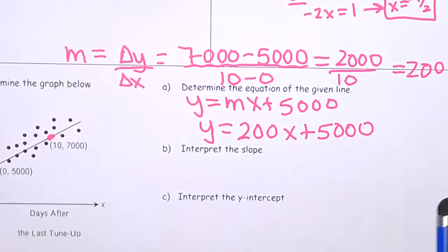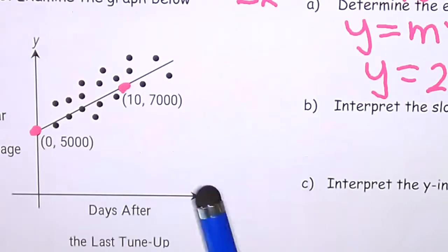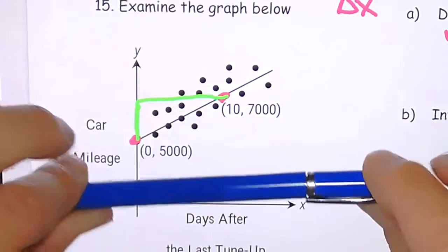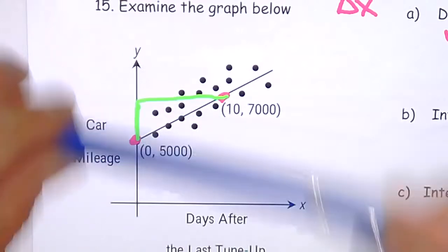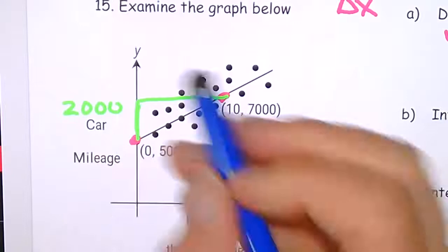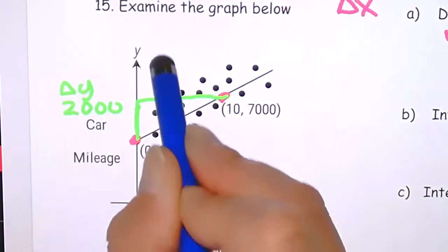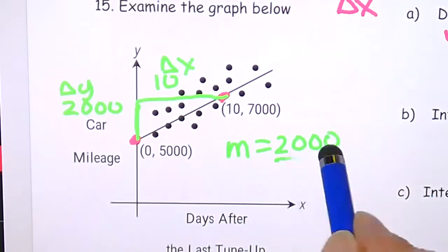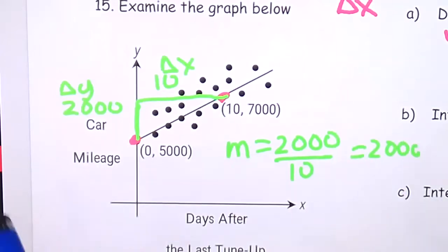You could also find the slope by drawing a slope triangle: from height 5000 to 7000 is a rise of 2000; from x equals 0 to 10 is a run of 10. That's 2000 over 10, which reduces to 200 — the same slope. Now we interpret: the slope means on average, as the number of days after the last tune-up increases by 1, the car mileage increases by about 200 miles.